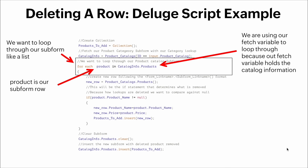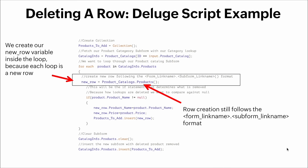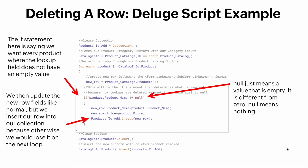`product` is our subform. We use our fetch variable to loop through it because our fetch variable holds the catalog information. We then create our `newRow` variable inside the loop because each loop iteration represents a new row. Row creation still follows the `form_link_name.subform_link_name` format.